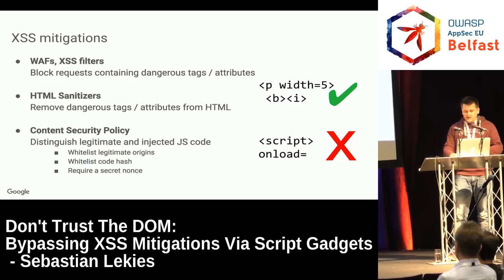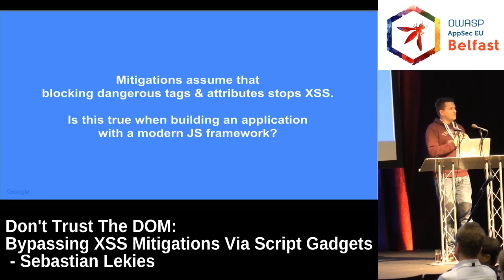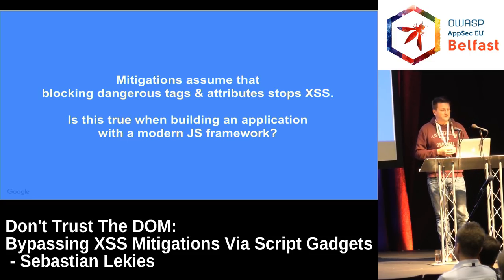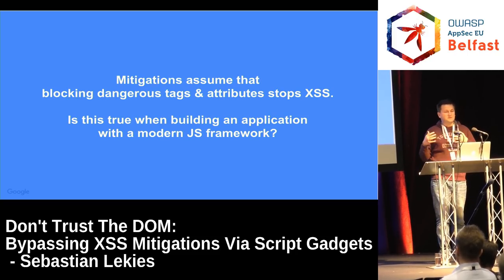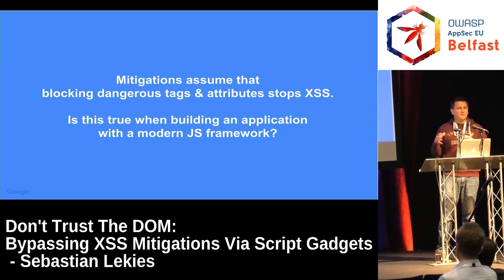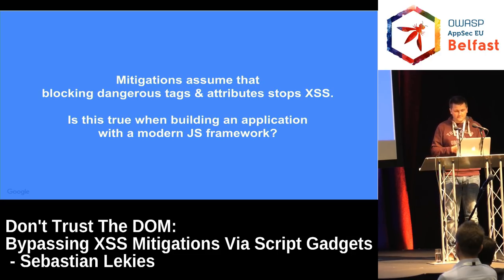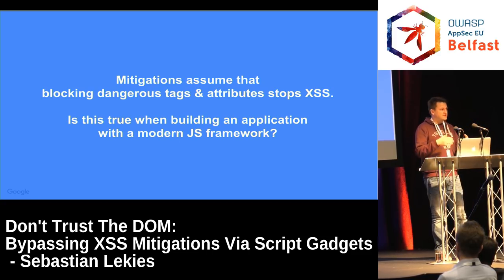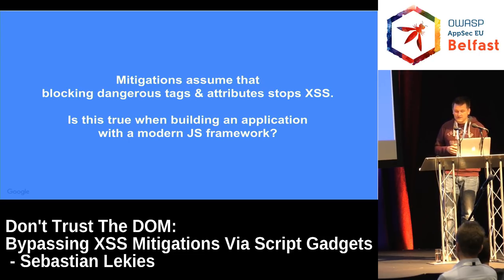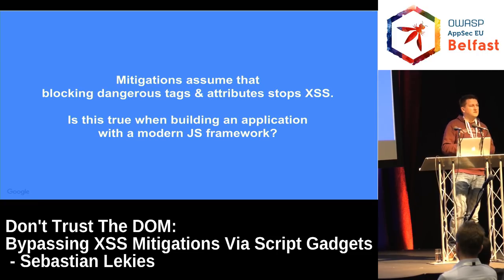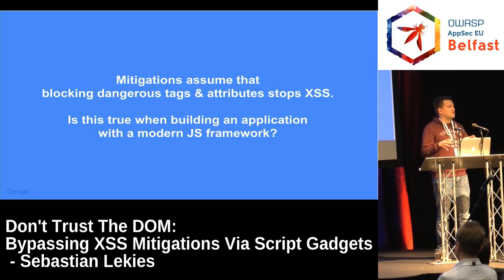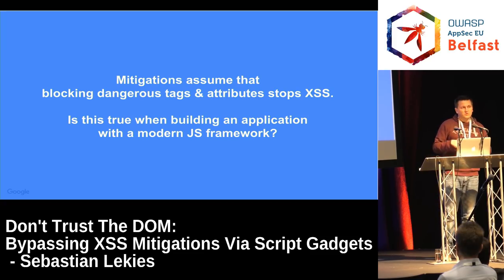The main assumption of XSS mitigations is that you can stop XSS attacks by blocking dangerous tags and attributes. What we ask in this research is: is this assumption really true when building a modern application — not a classical reflected XSS from ten years ago, but a modern application that makes heavy use of JavaScript libraries? The short answer is no. To explain why, I want to first talk about JavaScript frameworks. The main purpose of a modern JavaScript library is to interact with the DOM — reading, writing, and reacting to user interactions.